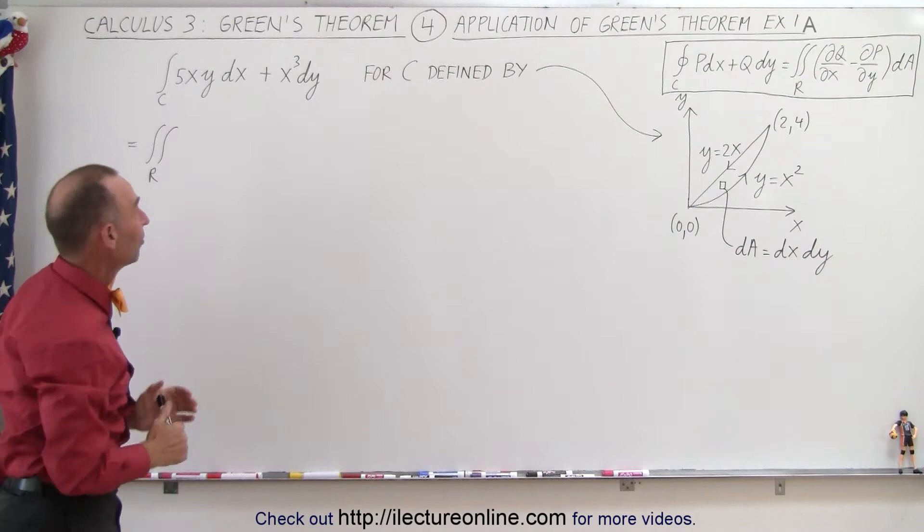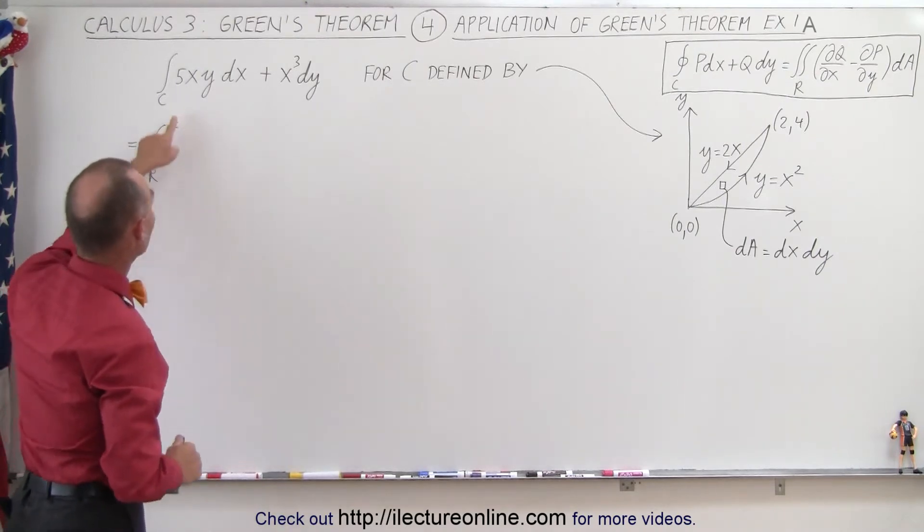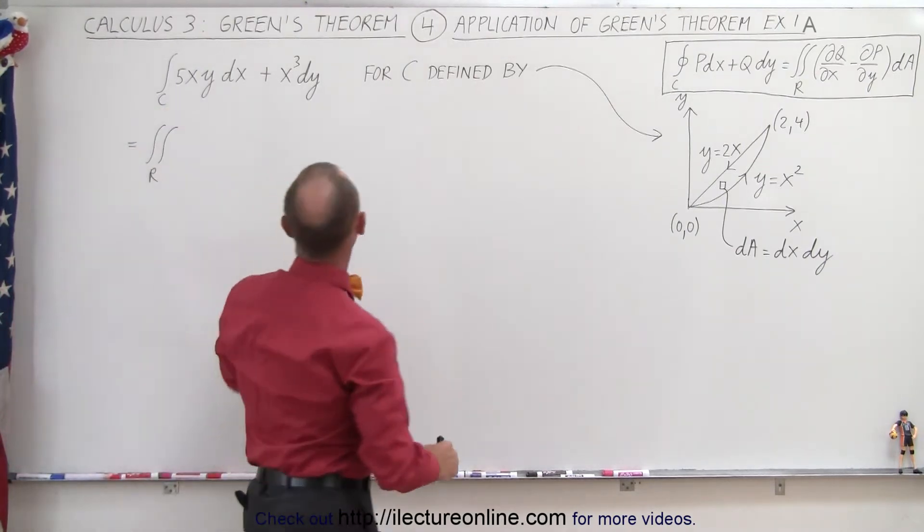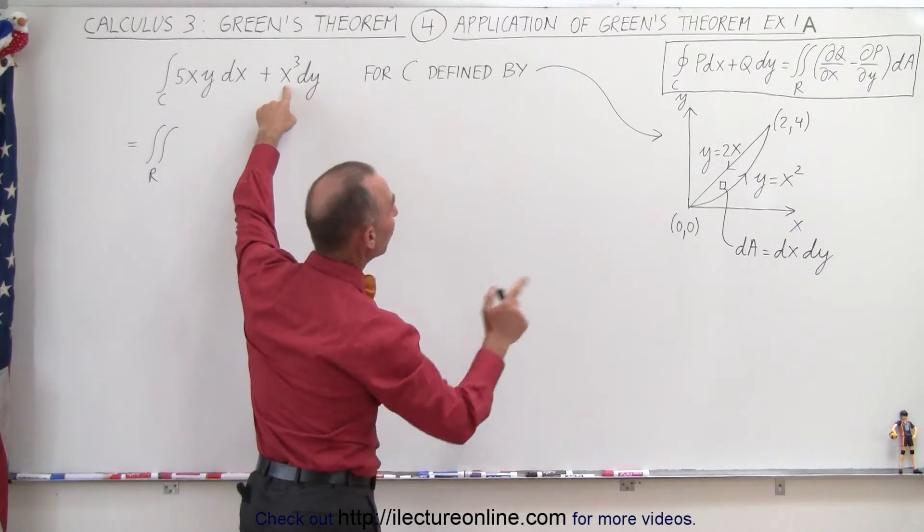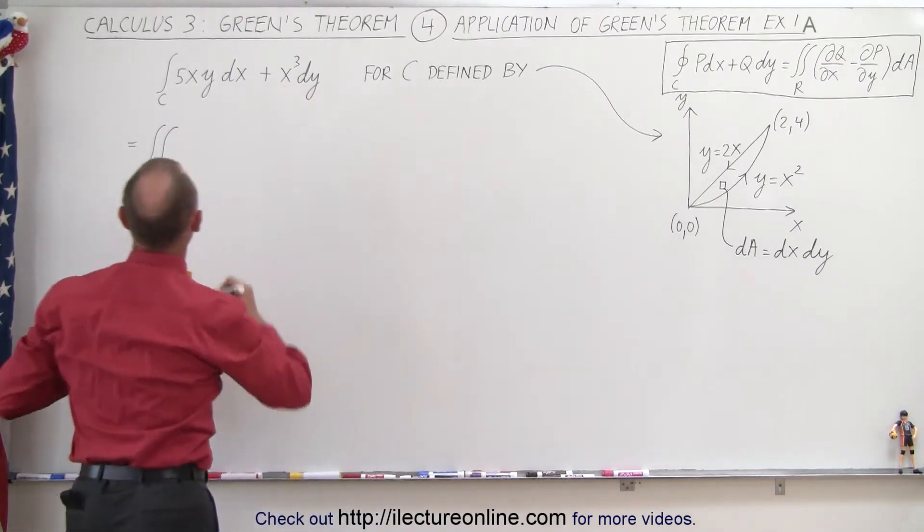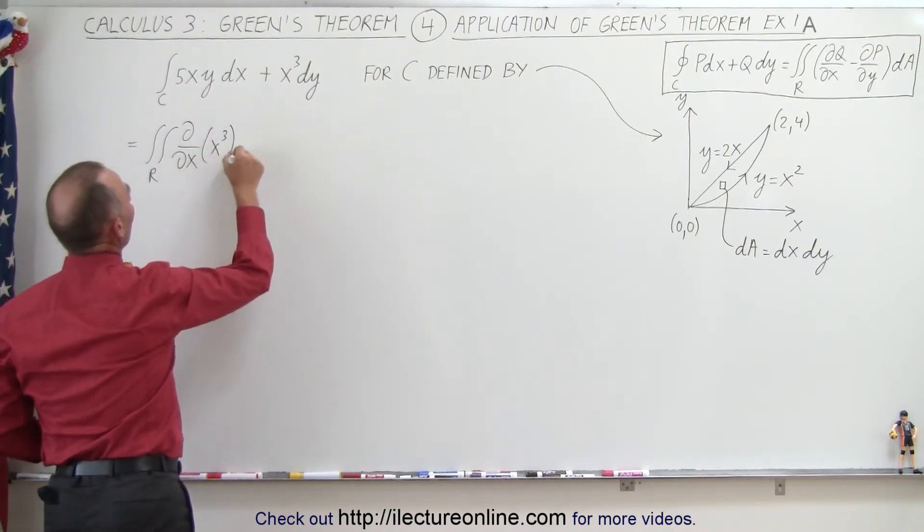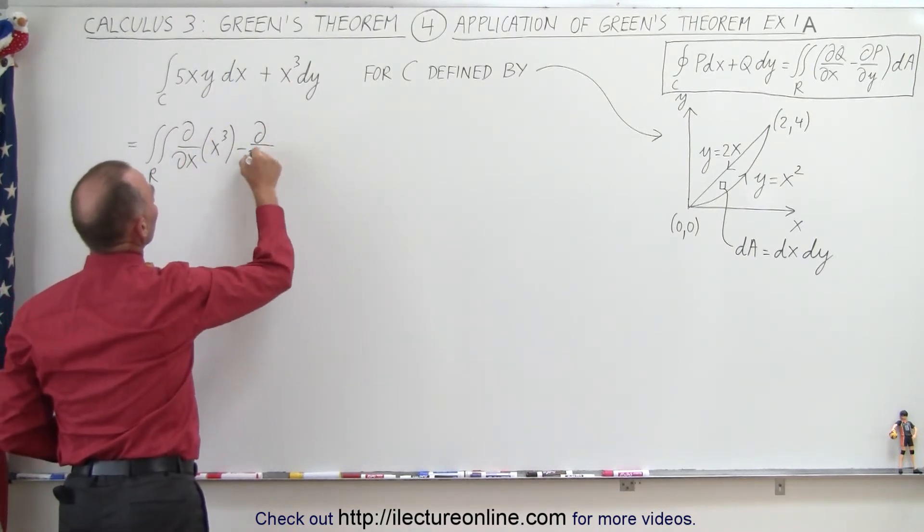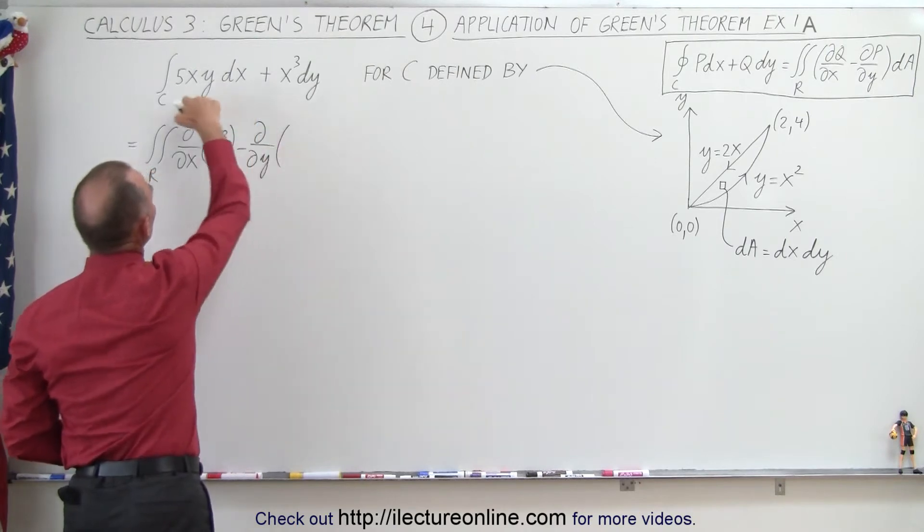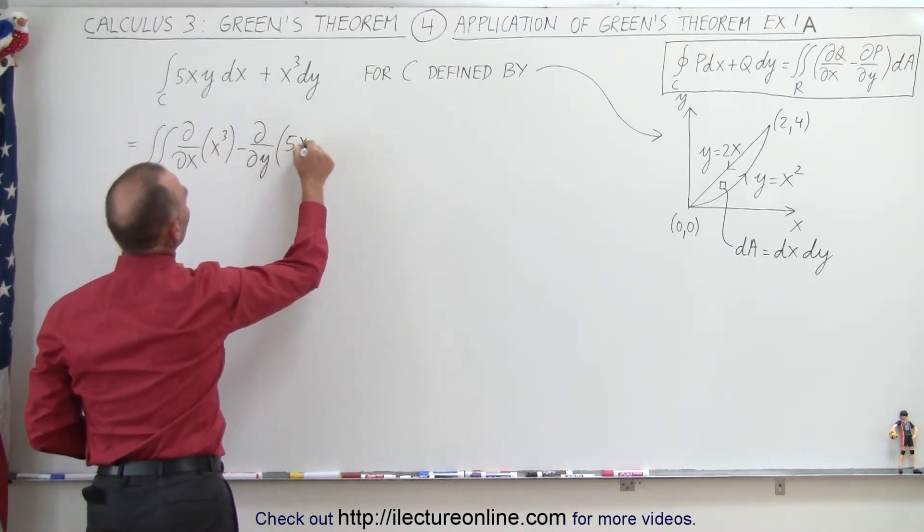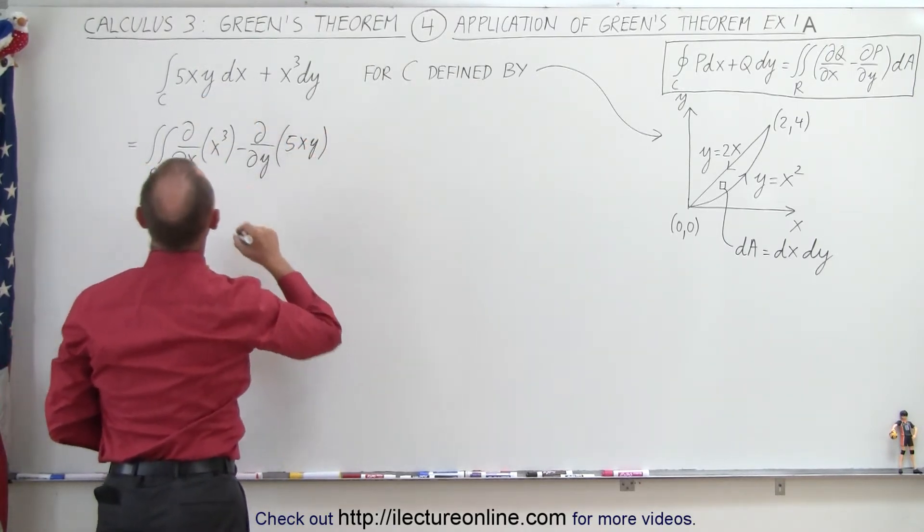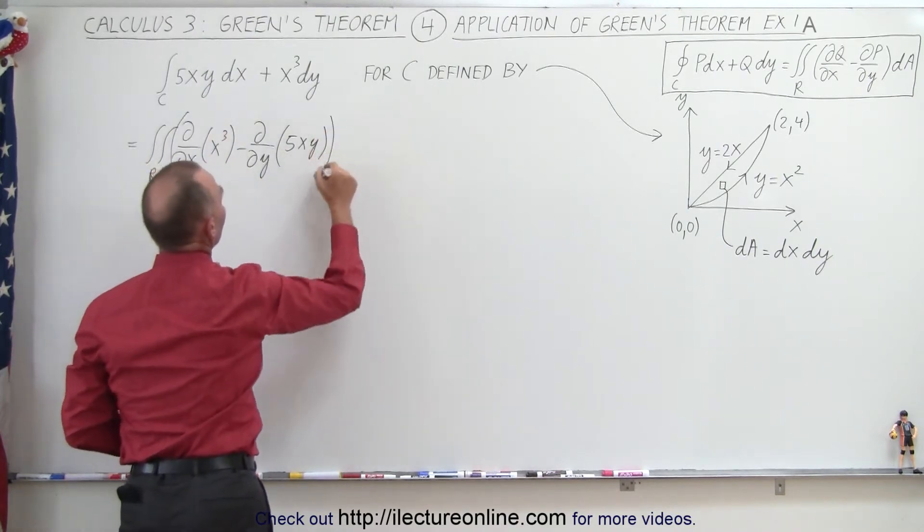So let's go ahead and try that and see what that looks like. First we need to find the partial of Q, which is here, with respect to x. So we have the partial with respect to x of x³ minus the partial with respect to y of P, which is 5xy.